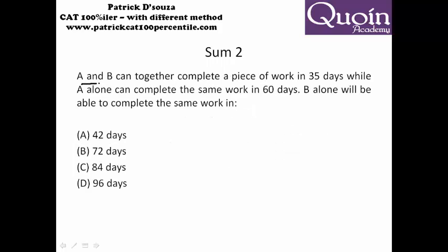Here they are given A and B can complete a work in 35 days, A alone can do it in 60 days. So let's take LCM of 35 and 60, which comes to 420. A can do it in 60 days, so per day they will do 7 units of work. B, we do not know how many days. Together they take 35 days, that will be 12 units of work.